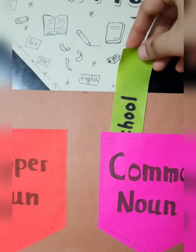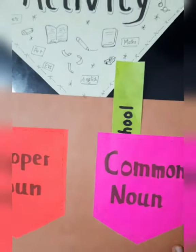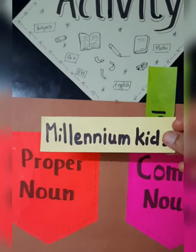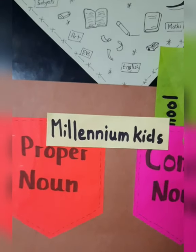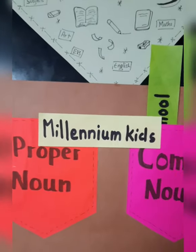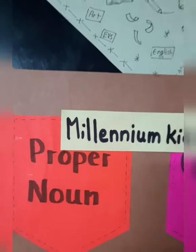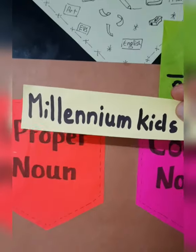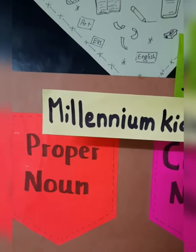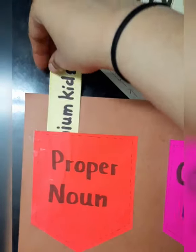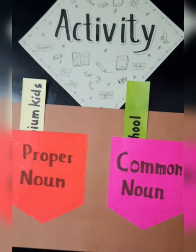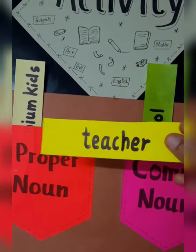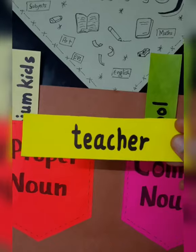We are going to place 'school' here in the pocket of common noun. Next is 'Millennium Kids School.' Now I have specified the name — the school name is Millennium Kids School and look, M is capital. I have mentioned the name of the school — Millennium Kids. So it's a proper noun and we are going to place it here in the pocket of proper noun.